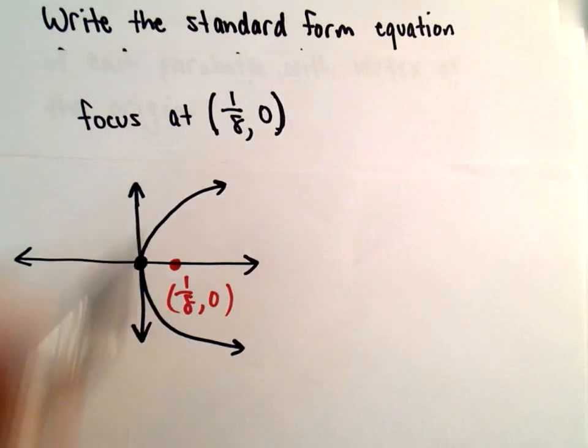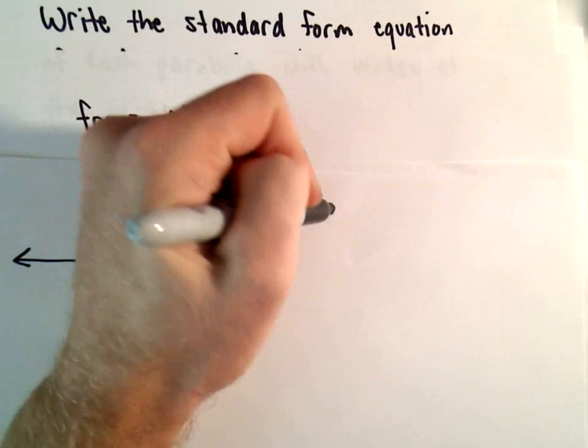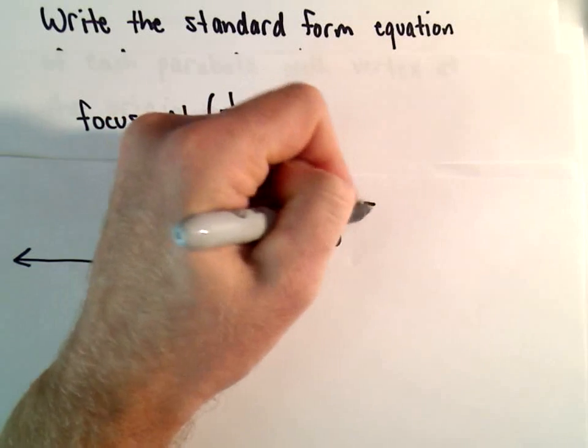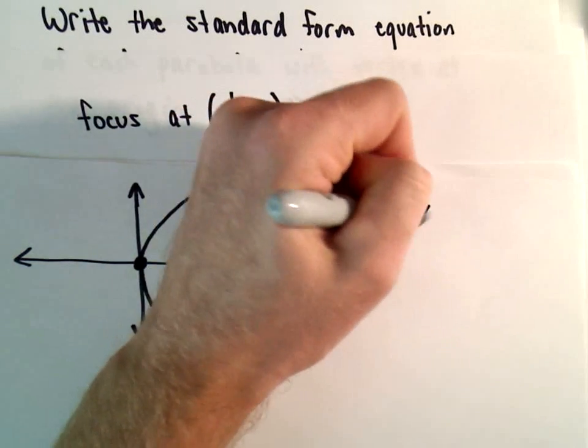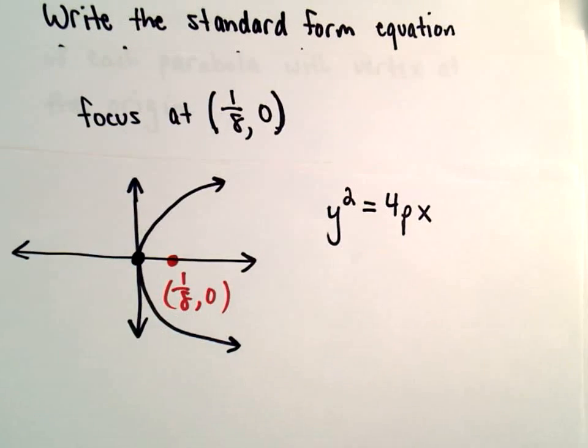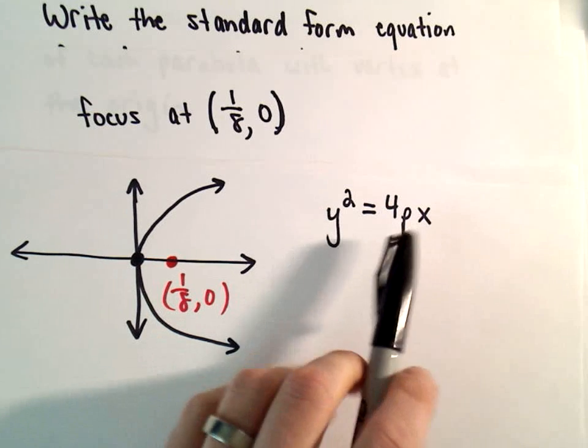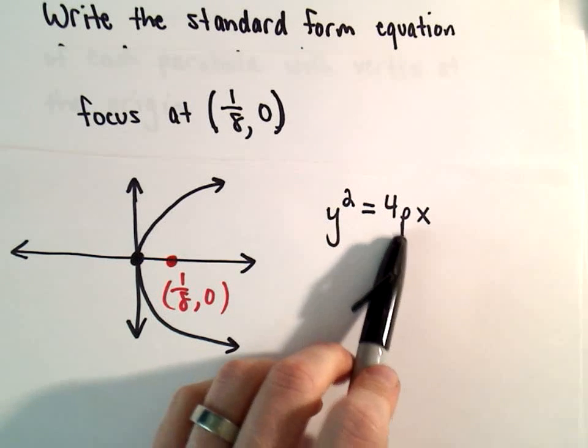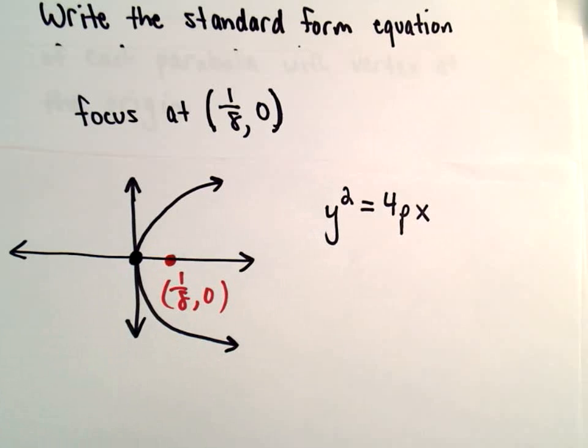Recall if our parabola opens to the right it's going to be of the form y squared equals 4p times x. So all we really have to do is deduce the value of p, do the arithmetic, and we'll have the standard form.